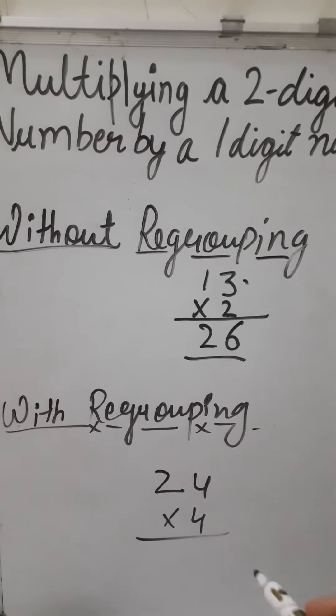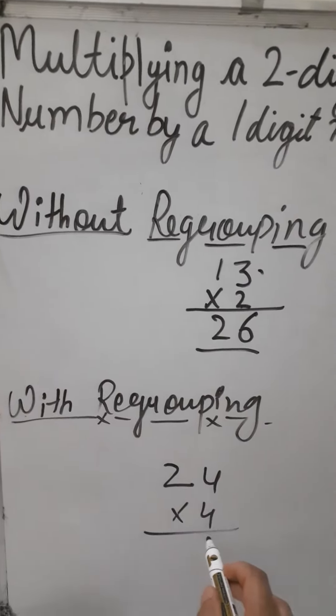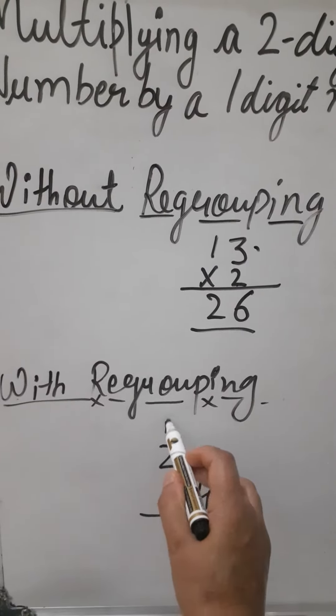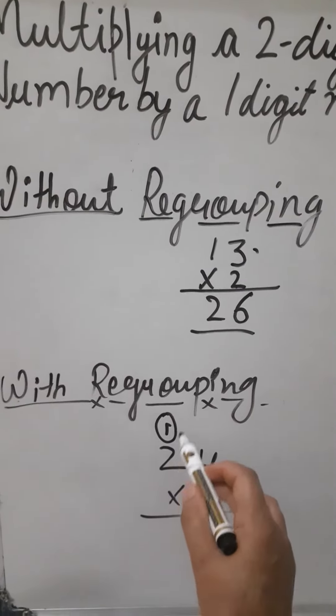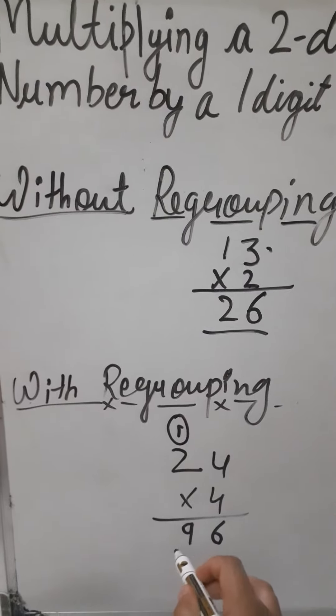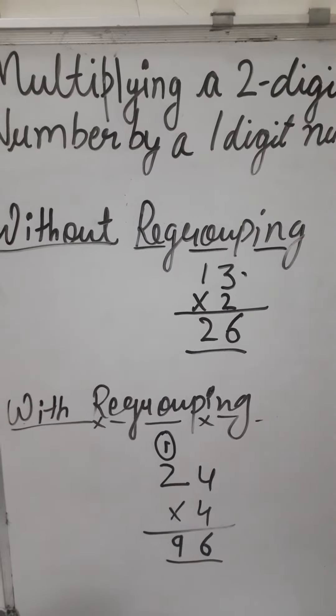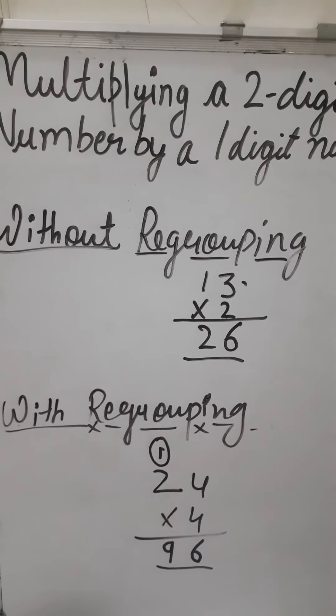But in with regrouping what is there? 4 fours are 16. 6 should be there and 1 is the carry over here. 4 twos are 8 and 1, 9. And 96 should be the answer. So there is a difference between both of them.